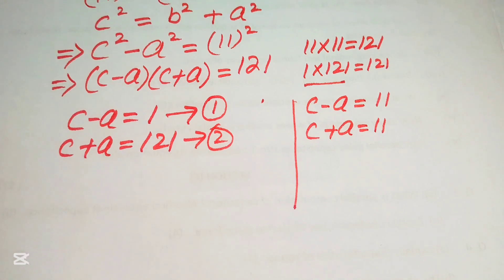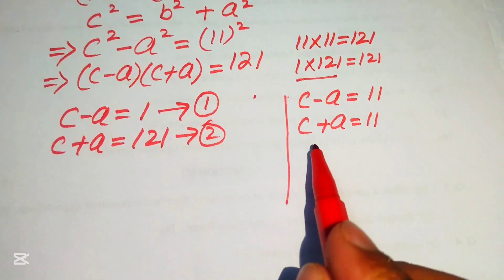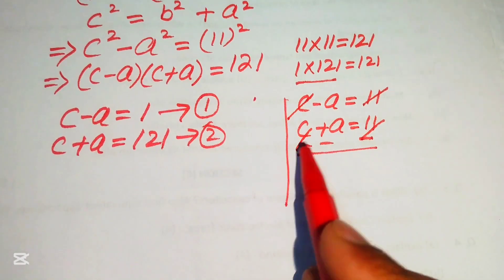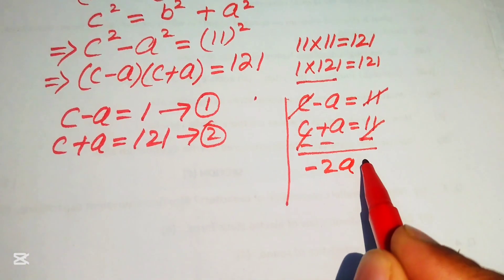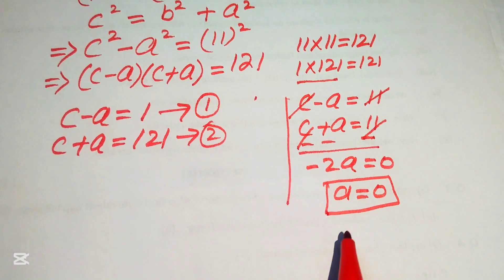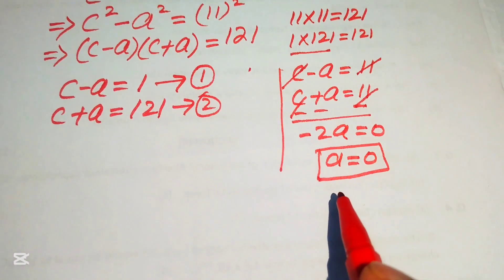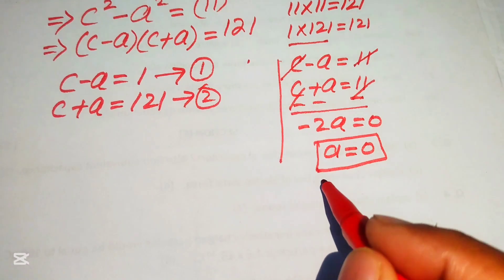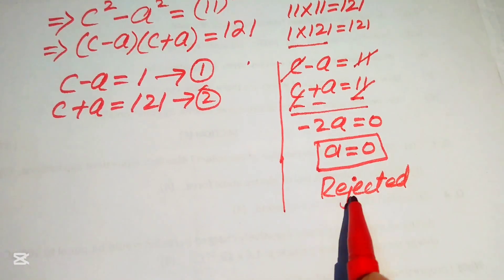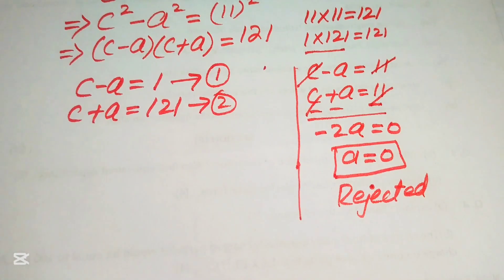Looking at the second case first: subtracting the two equations cancels the c terms, giving −2a = 0, so a = 0. But a is a side length of the right triangle, so it cannot equal zero. We therefore reject the second case and proceed with the first case only.